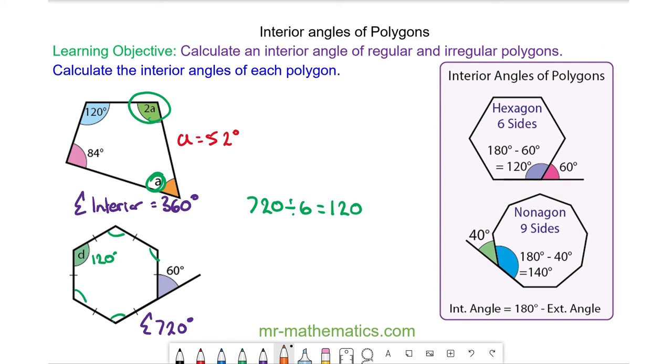We can use this fact to see that the interior and the exterior angles of a polygon lie along a straight line. Because you can see the interior plus the exterior add up to make 180 degrees.